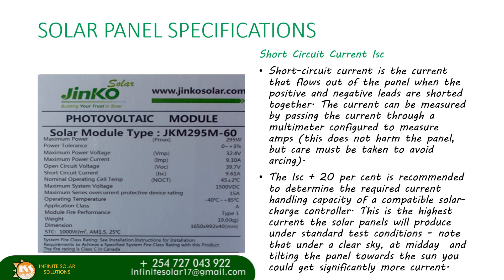Let's look at the short circuit current, what is indicated on the back plate as ISC. This is the current that flows out of the panel when the positive and the negative leads are shorted together. This does not harm the panel, but care should be taken to avoid arcing, and this current can be measured by passing the current through a multimeter configured to measure amps. The short circuit current plus 20 percent is what is recommended and required to determine the handling capacity of a charge controller.